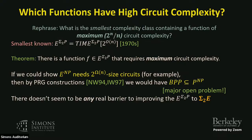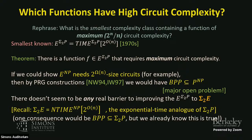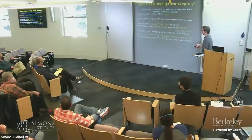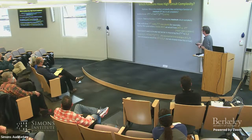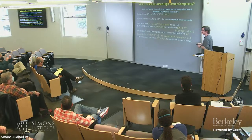There doesn't seem to be any real barrier to improving from E^{Sigma_2^P} to Sigma_2^E — the exponential-time analog. This is 2^{O(n)} time with an NP oracle, i.e., a SAT oracle. That's the exponential-time analog of Sigma_2^P. Note it's not a deterministic class calling an oracle; it's Sigma_2^E. And polynomial^n equals 2^{O(n)}, so query lengths are fine.